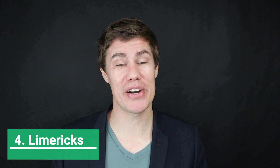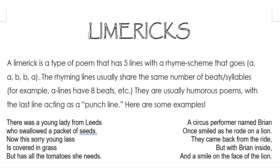Number four: Limericks. Teach your students limericks and let them write their own. A limerick is a type of poem that has five lines with a rhyme scheme that goes A-A-B-B-A. The rhyming lines usually share the same number of beats or syllables, and they are usually funny or humorous poems with a last line acting as a punch line. Here's one example: 'There was a young lady from Leeds who swallowed a packet of seeds. Now this sorry young lass is covered in grass, but has all the tomatoes she needs.' Let the students work through some examples, then write their own and share with the rest of the class.